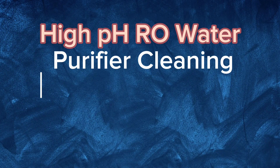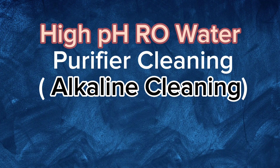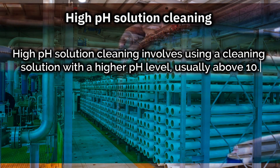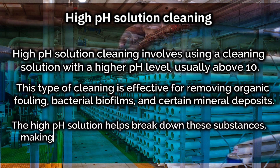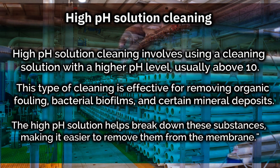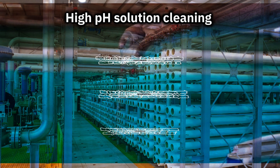High pH RO water purifier cleaning — alkaline cleaning. High pH solution cleaning involves using a cleaning solution with a higher pH level, usually above 10. This type of cleaning is effective for removing organic fouling, bacterial biofilms, and certain mineral deposits. The high pH solution helps break down these substances, making it easier to remove them from the membrane.